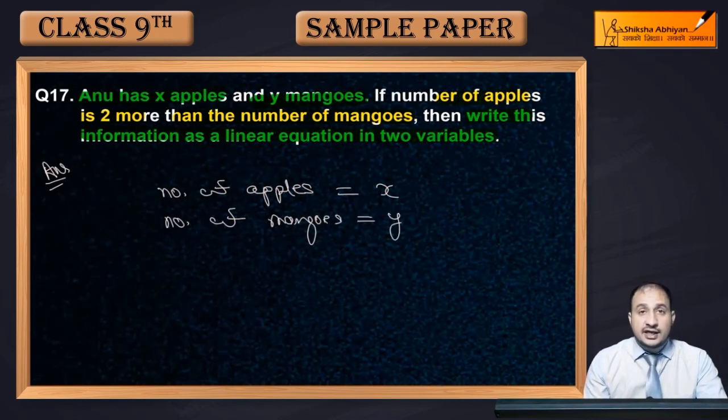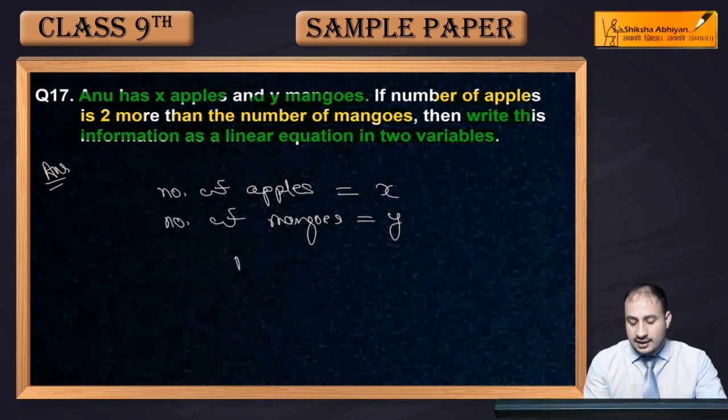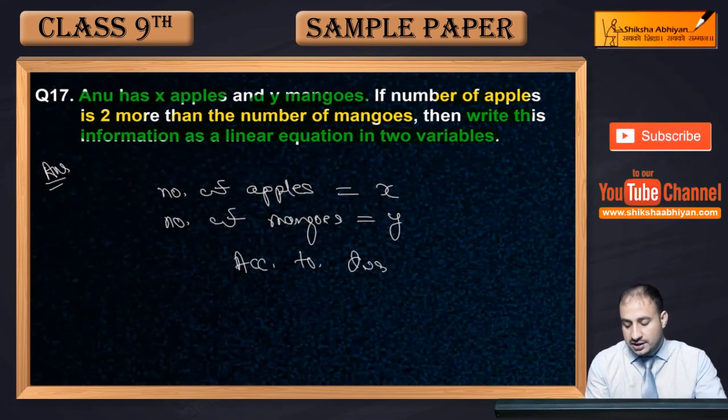And what are we given? That the number of apples is 2 more than the mangoes. Then according to question, according to question...